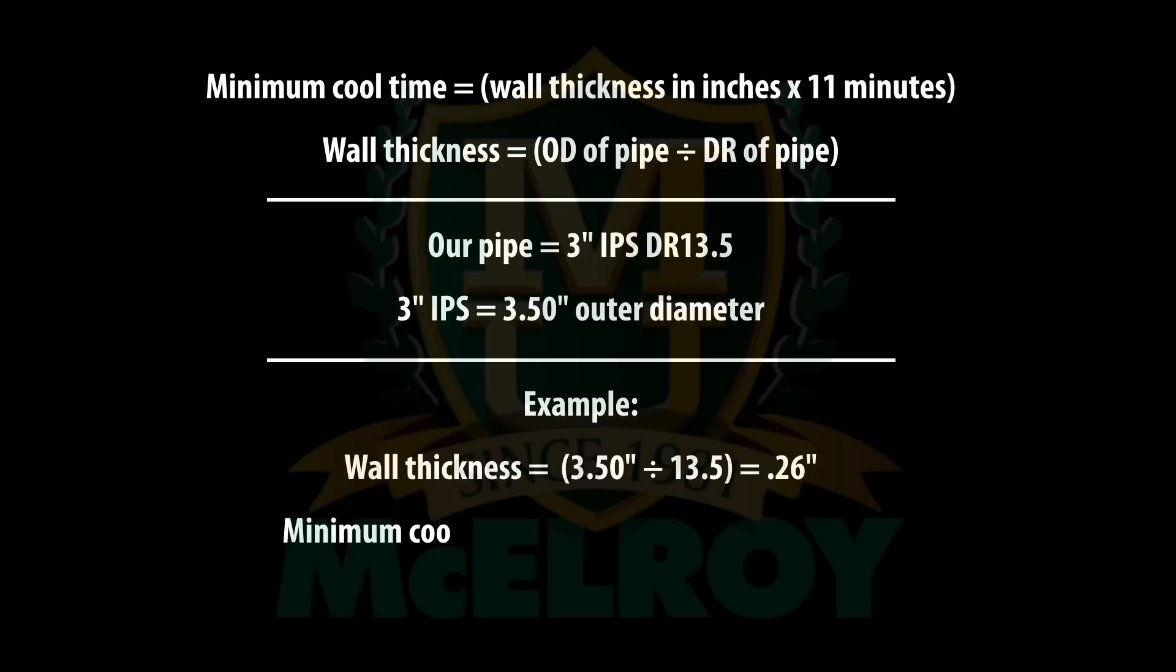To calculate our cool time, we will take the wall thickness of 0.26 inches and multiply it by 11 minutes. The cool time for 3 inch IPS DR 13.5 pipe will be 2.86 minutes, which works out to be 2 minutes and 52 seconds.